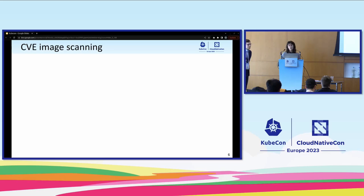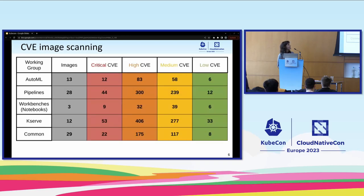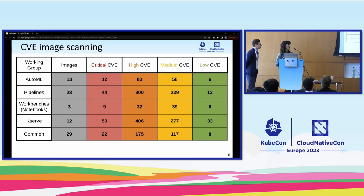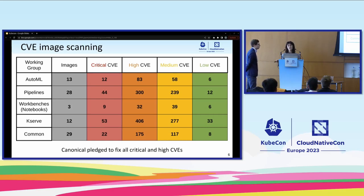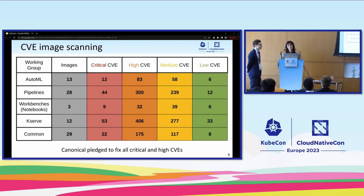We'd like to share some insights from our first CVE scanning starting from version 1.7 Q4. This table contains information about the number of images used by a specific group and the number of CVEs divided by severity. Luckily, most of these CVEs originate from our external dependencies, and the majority of them can be addressed by just upgrading to a newer version. Canonical has already worked towards minimizing these numbers and has even achieved zero critical and zero high severity CVEs. We expect their work to be contributed upstream.